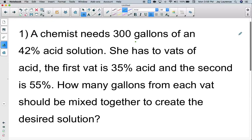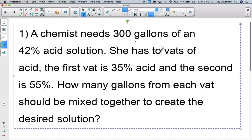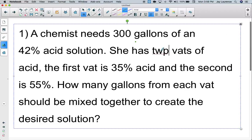It says Candace needs 300 gallons of a 42% acid solution. She has two vats of acid. The first vat is 35% acid and the second is 55%. How many gallons from each vat should be mixed together to create the desired solution?